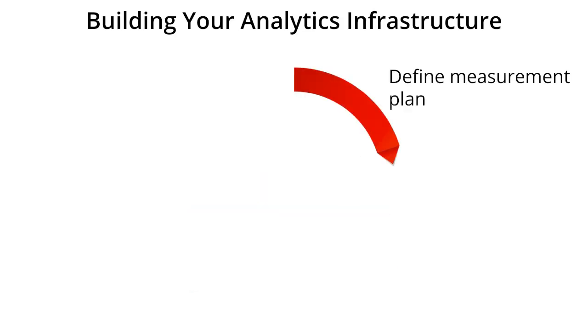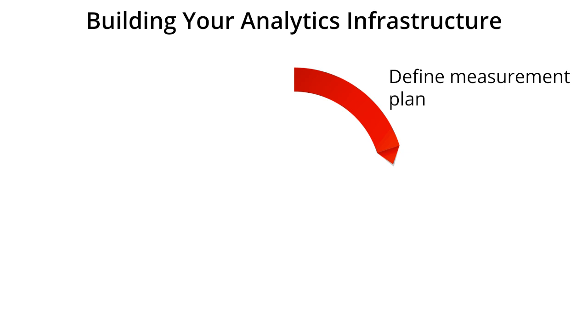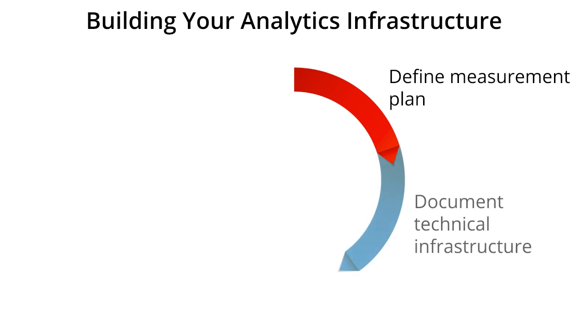Once you've organized the right people to be involved with the planning conversation, decide what you need to measure. Start with a measurement plan, which identifies your business objectives. The next step is to understand your technical environment by documenting your technical infrastructure. In this stage, you'll be asking your team questions like: What are our server technologies? Are we active on mobile? Are we using responsive design? Do the technologies we're using make it possible to track everything we need to track?